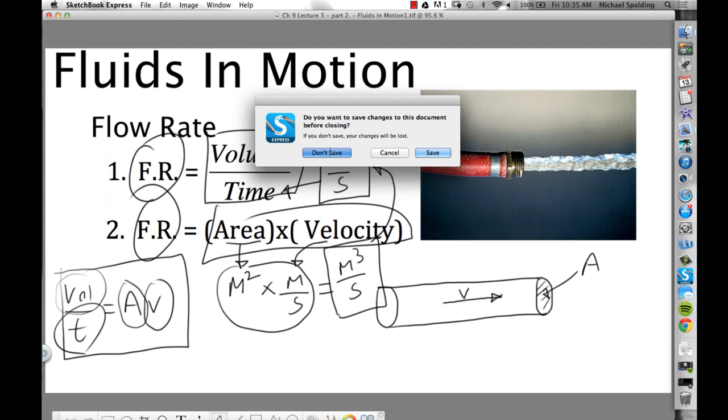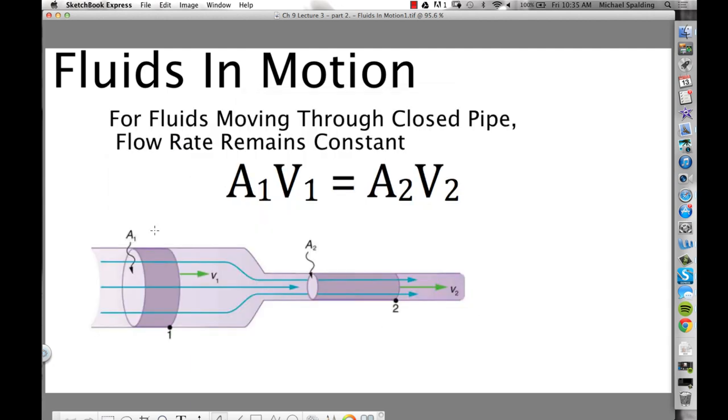Now why is that? What's the explanation? It's real simple. So here we have a pipe that goes from fat to skinny. Big cross-sectional area to small cross-sectional area.